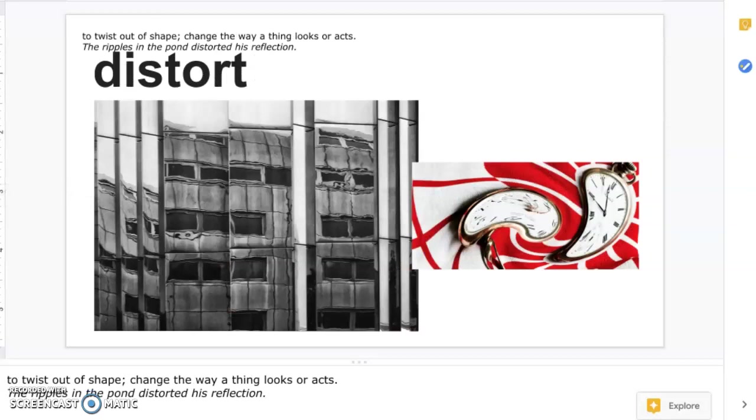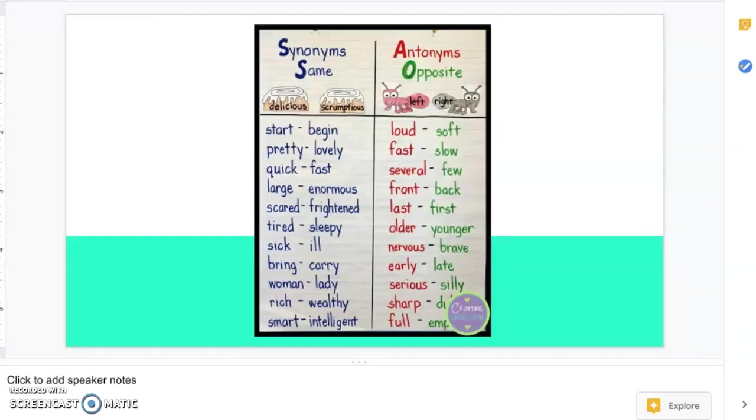So we are going to be talking about antonyms and idioms today. These should be review concepts for you guys. We went over these in reading and English classes. However, I know it's been a while, so it's always good to review. Synonyms are words that are similar in meaning, for example, start and begin, pretty and lovely, quick and fast, large and enormous, tired and sleepy.